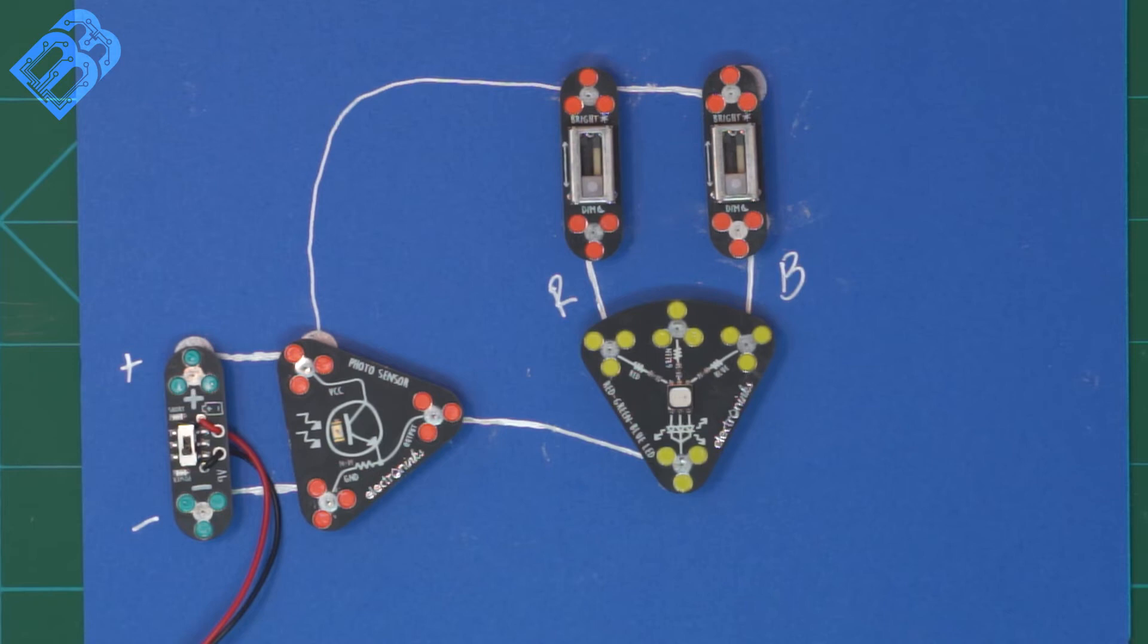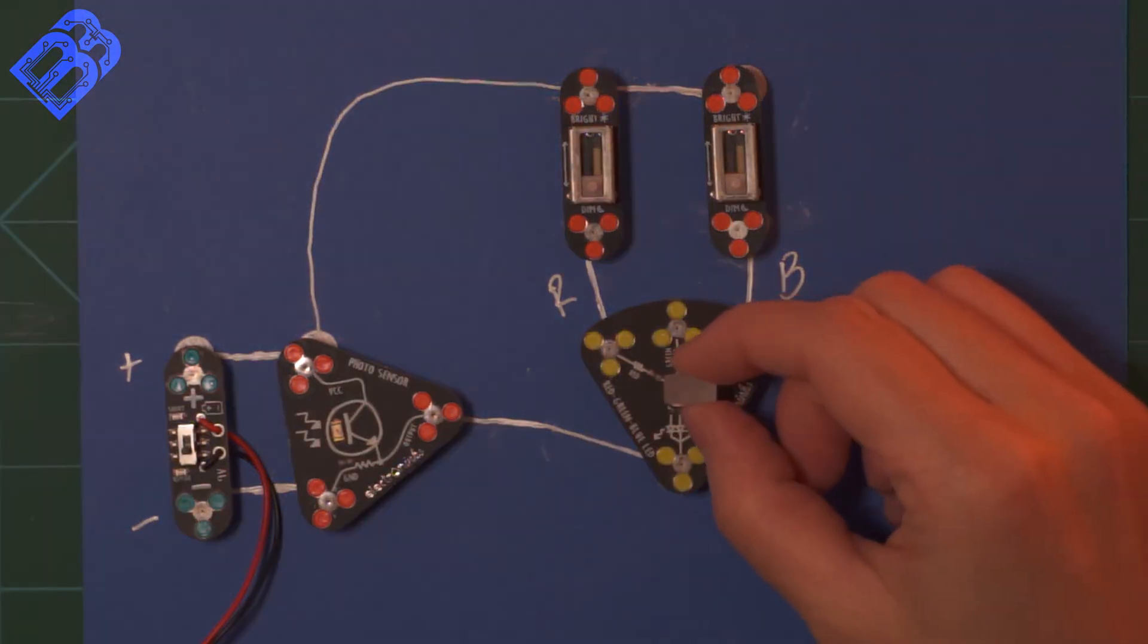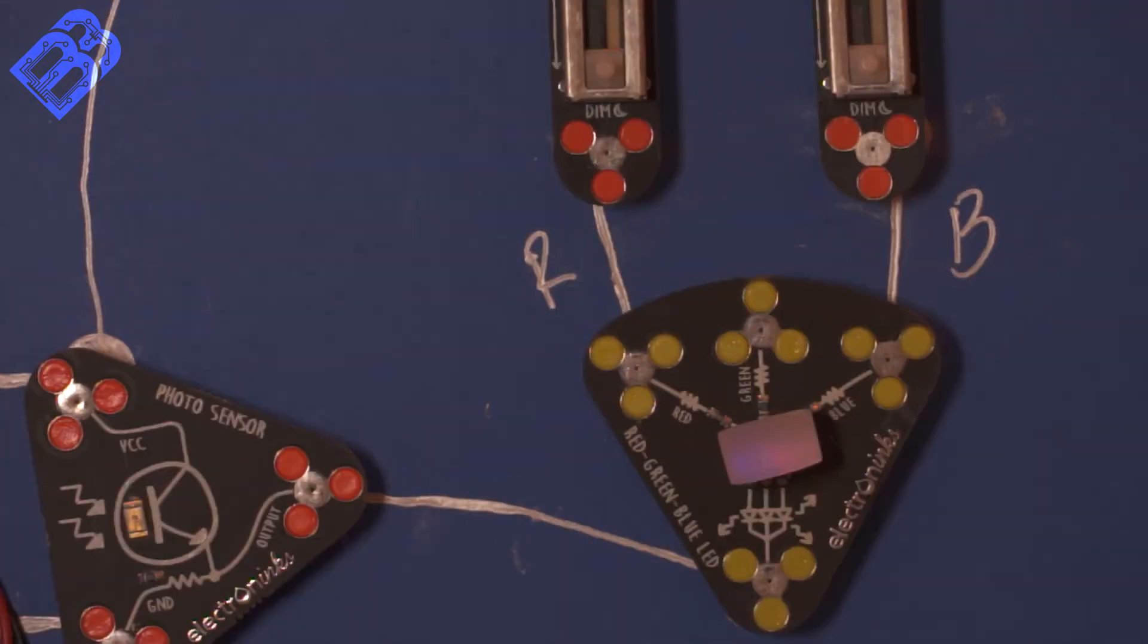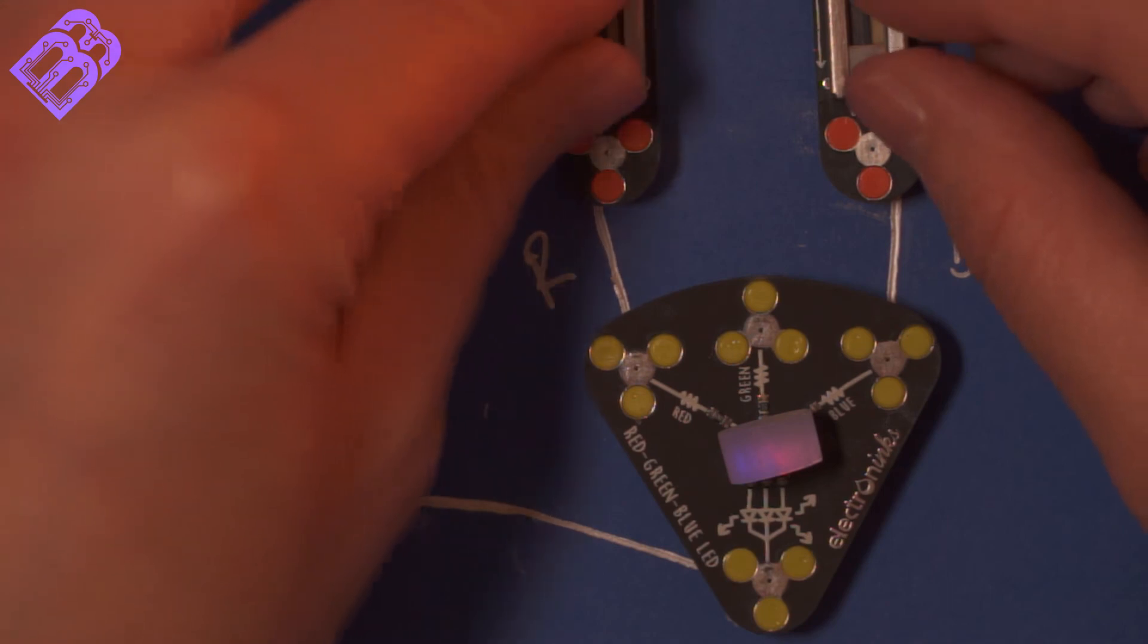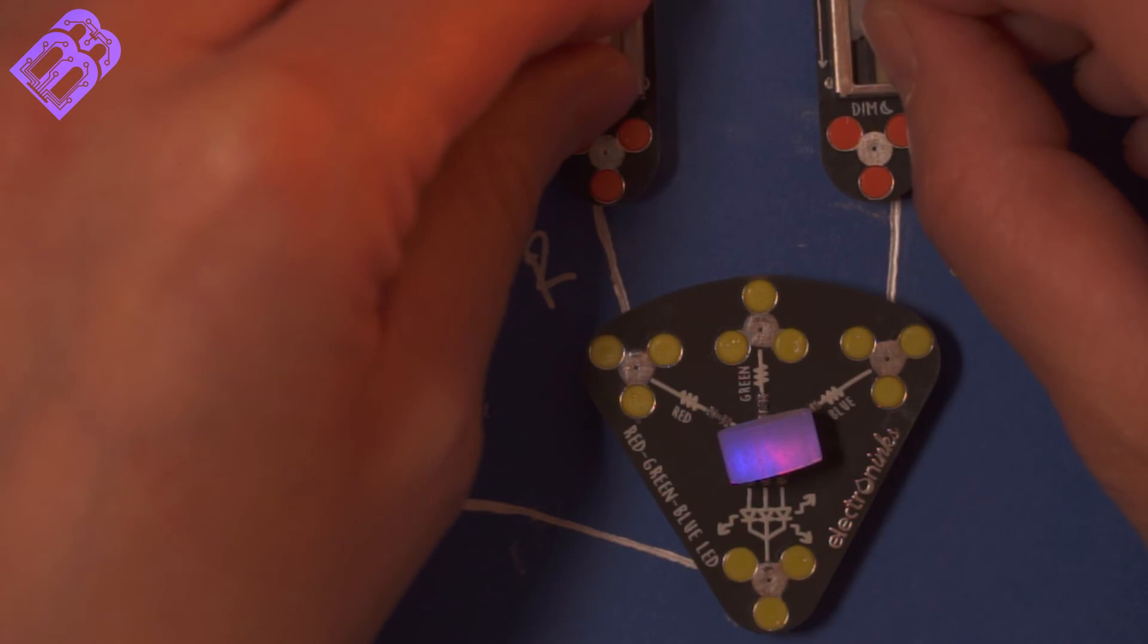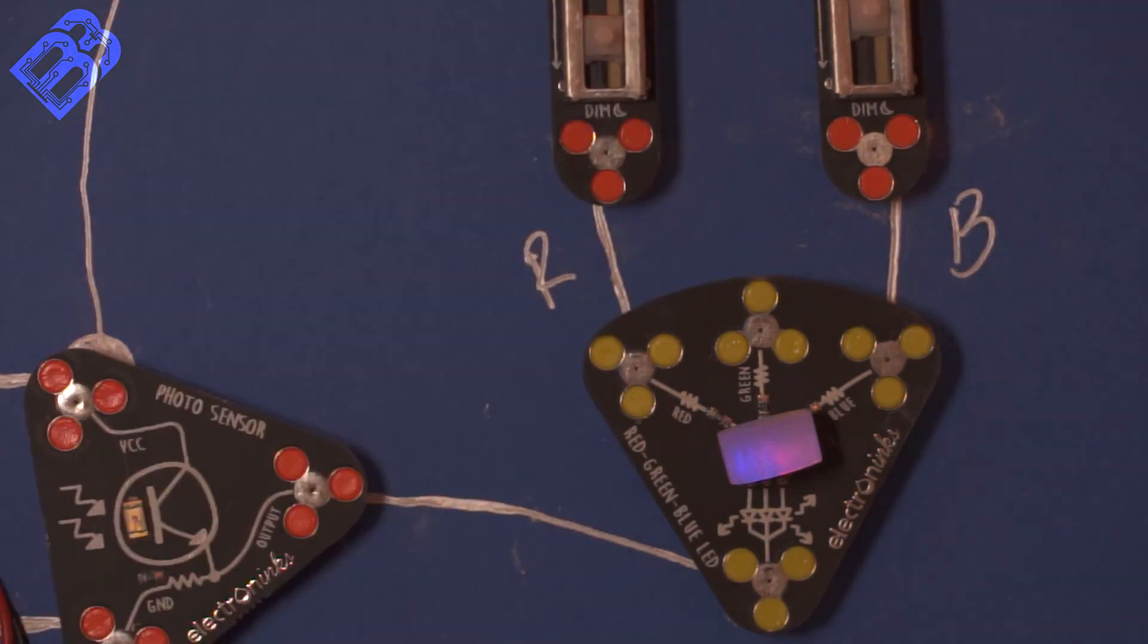To make it a little easier to see what's happening, let's dim our lights and add our diffuser. I'm going to add my diffuser on its side because that seems to help the color mixing. With my battery on, I can now adjust my levels and get the right color. I think that looks pretty good.